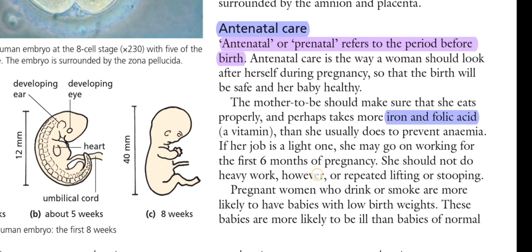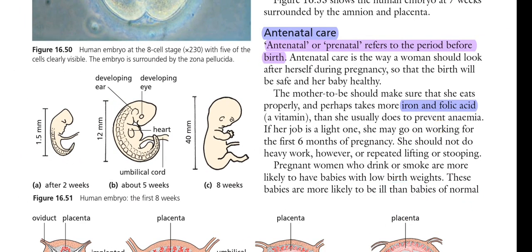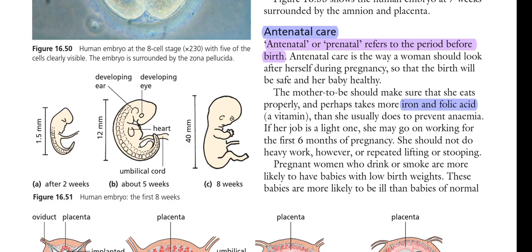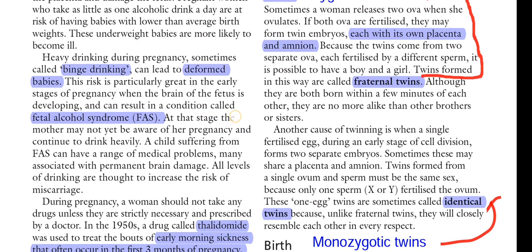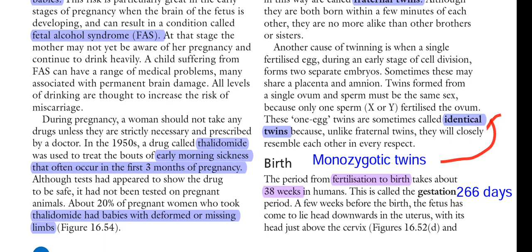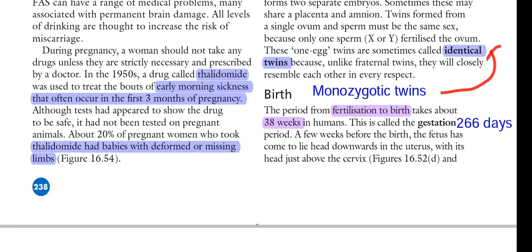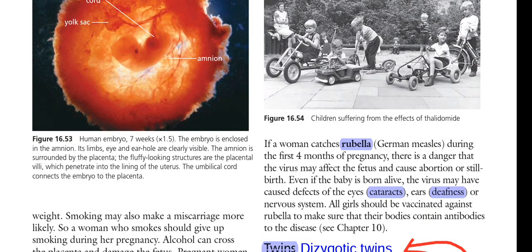She may continue working for the first six months but should not do heavy work, repetitive lifting, or stooping. Pregnant women who drink or smoke are more likely to have babies with low birth weight, and these babies are more likely to be ill than babies of non-smoking, non-drinking mothers. Fetal alcohol syndrome is one such disease. Smoking and alcohol act as mutagens and should not be used by pregnant women, as they can cause low birth weight and other complications.